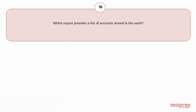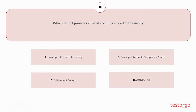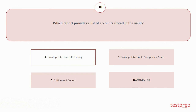Question number 10: Which report provides a list of accounts stored in the vault? Your options are: A. Privileged Accounts Inventory, B. Privileged Accounts Compliance Status, C. Entitlement Report, D. Activity Log. The correct answer is option A.